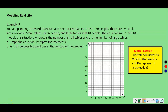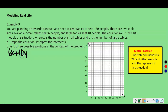Modeling real life — Example 3. You are planning an awards banquet and need to rent tables to seat 180 people. There are two table sizes available: small tables seat 6 people, large tables seat 10 people. The equation 6X plus 10Y equals 180 models this situation, where X is the number of small tables and Y is the number of large tables. Graph the equation, interpret the intercepts, and find three possible solutions in the context of the problem. This is in standard form, so we'll do just like we did before: substitute 0 in for X and solve for Y.